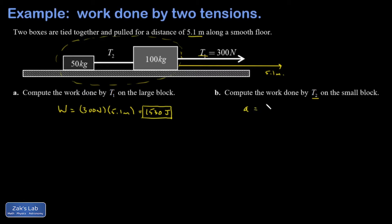I have A equals F net over M and that's 300 newtons over 150 kilograms which gives me an acceleration of 2 meters per second squared.